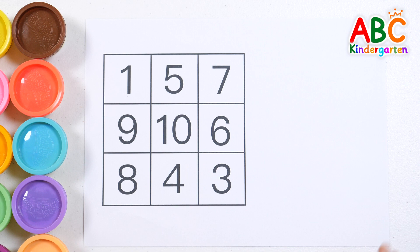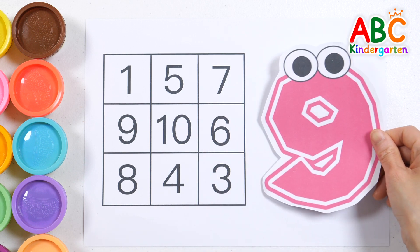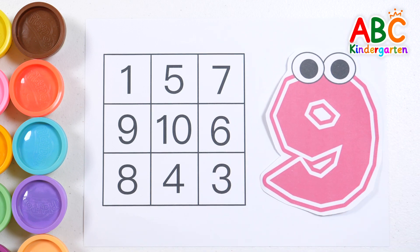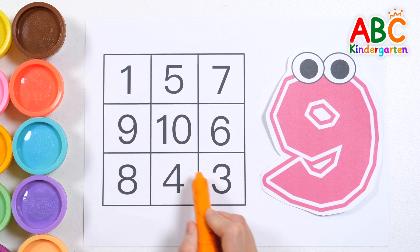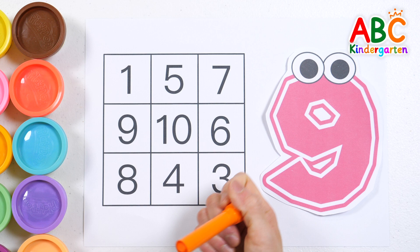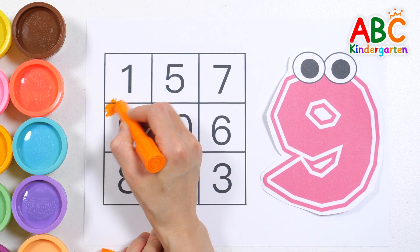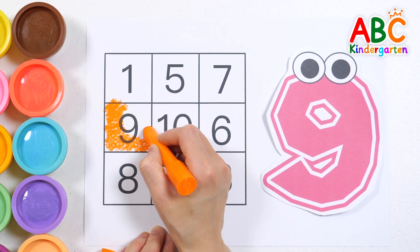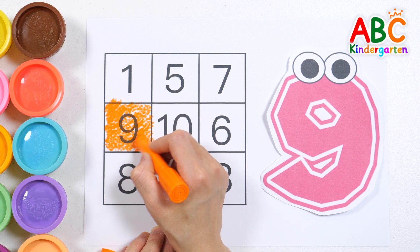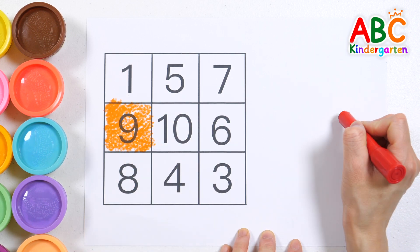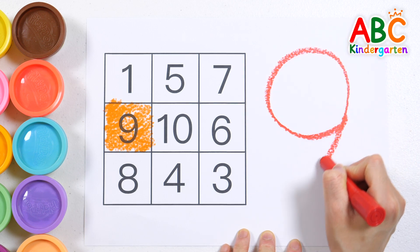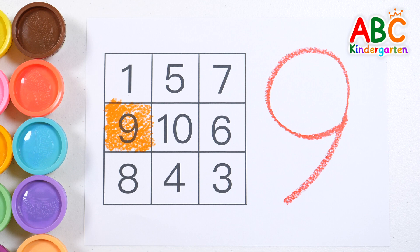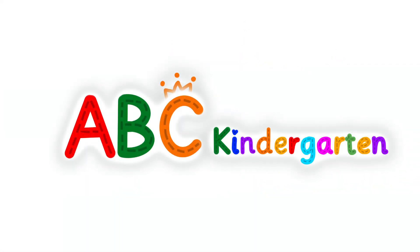There are several numbers on the left. Nine. Let's find a number in the table that is the same as the number 9 on the right. Found it! Let's write numbers with a red crayon. Nine. Great job! Nine.